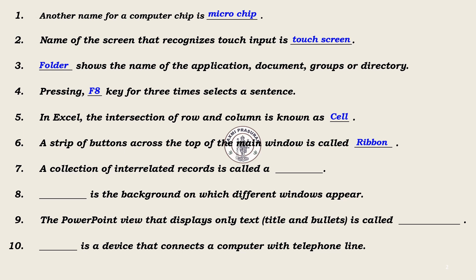7. A collection of interrelated records is called a database. 8. Dash is the background on which different windows appear. Answer: Wallpaper.